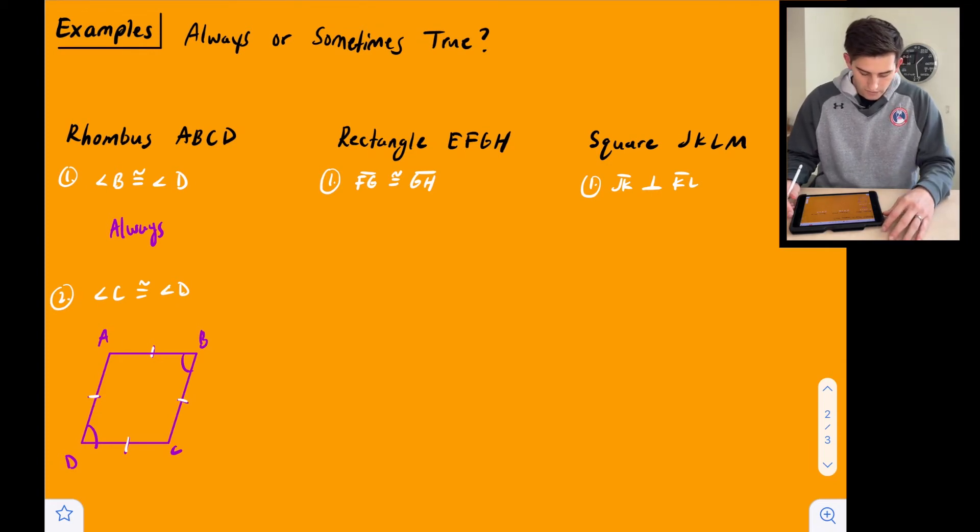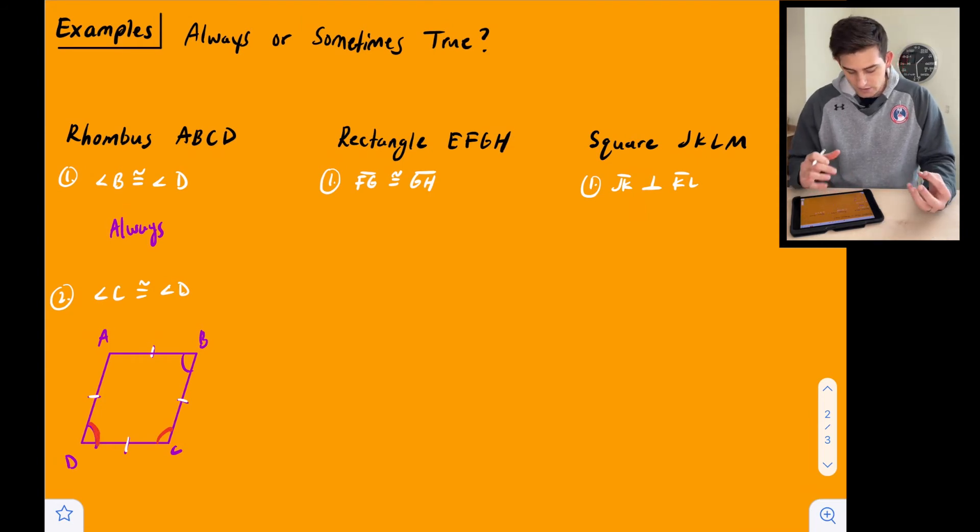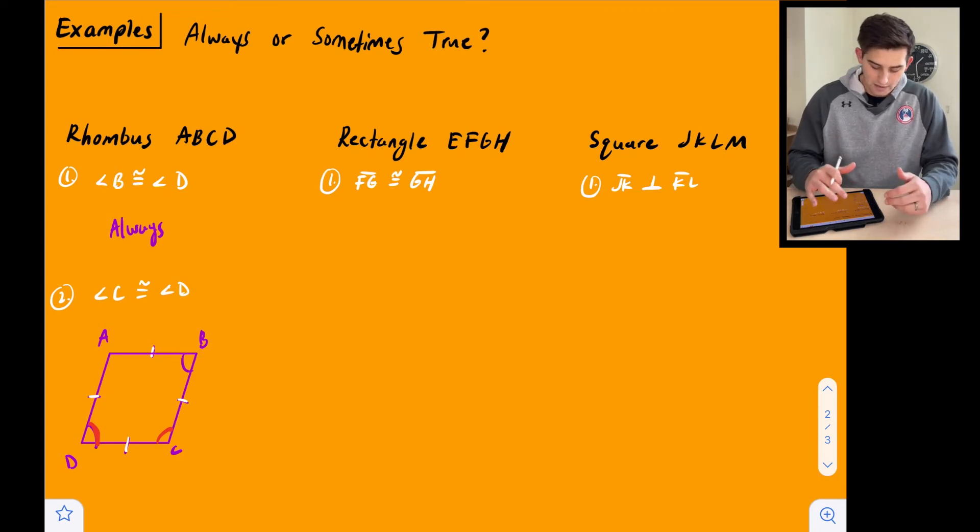Now for number two, we have angle C and angle D. So for angle C and angle D, we're looking right here, right? Angle C and D. And if we look at the rhombus in this shape, we're going to say, no, those are not congruent. So it's not always.